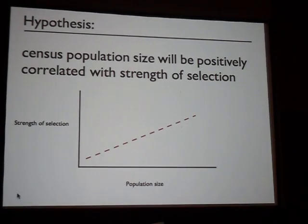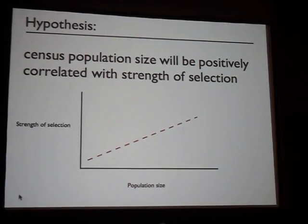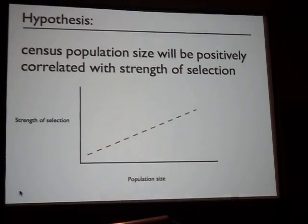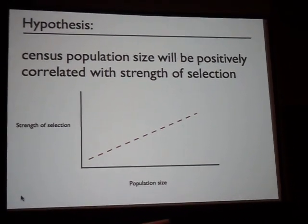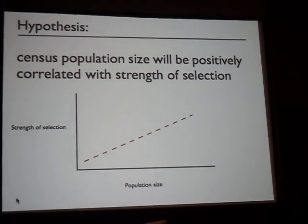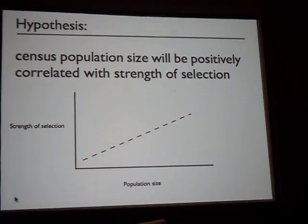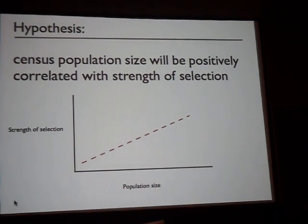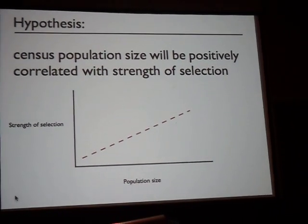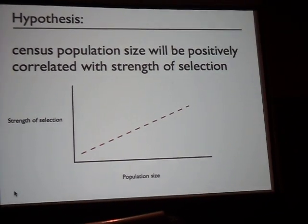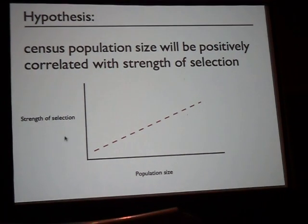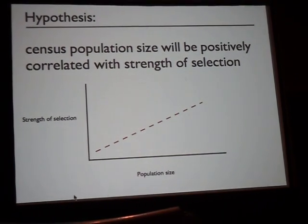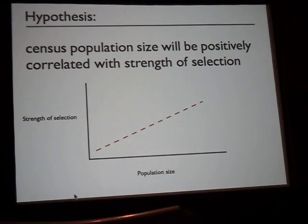This suggests that if the impact of selection on neutral diversity across the genome is correlated with population size — if larger populations experience stronger selection — that could explain why we don't see a strong correlation between population size and neutral diversity. This has been well explored theoretically for many years, starting in the 1970s with a paper by John Maynard Smith and Haigh, but there's been very little empirical data to address this question. We decided that if we could measure the impact of selection on a genome, we could develop an empirical test of whether this theoretical prediction holds.